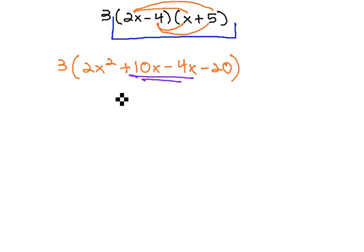When we combine the like terms in the middle, we get 3 times 2x squared plus 6x, 10x minus 4x is 6x minus 20.